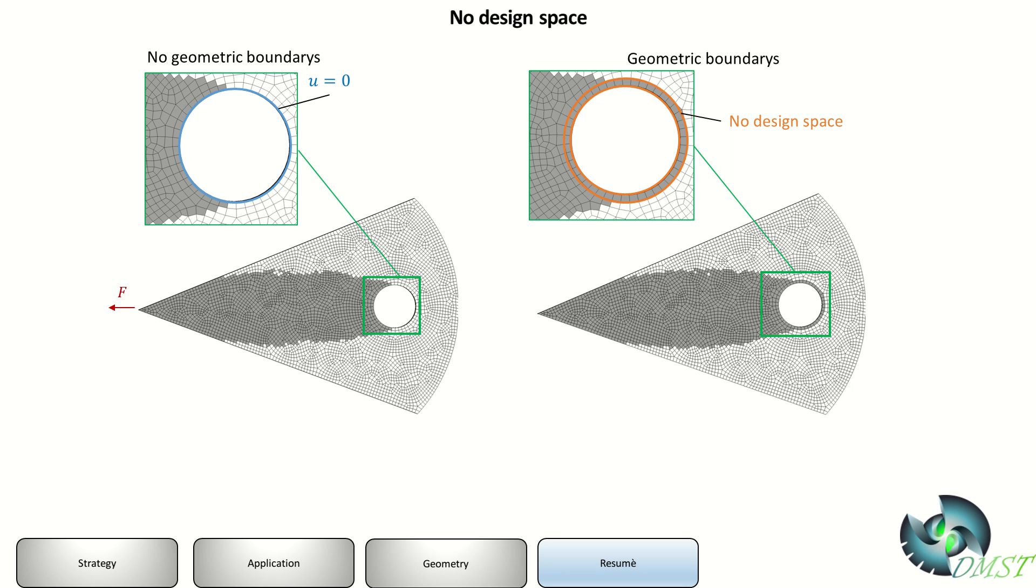What you can also do is you can define a non-designed space. If you have something like in this case for a boat, you can say around this hole I don't want, I want material.